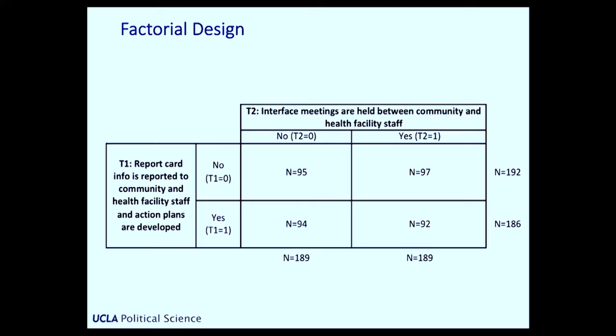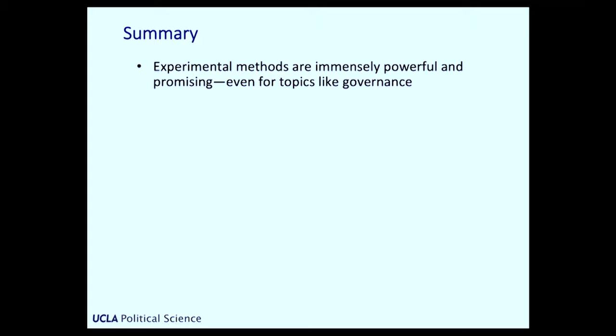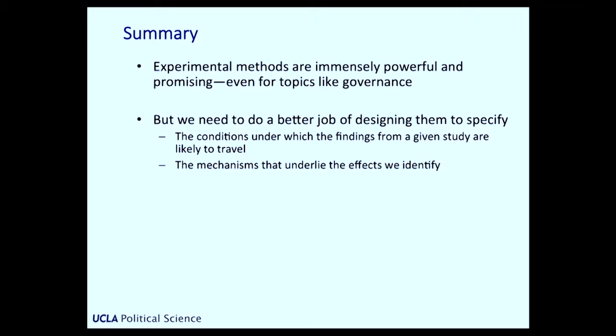So in summary: experimental methods are really powerful and promising, even for topics that are hard to study like governance. But we need to do a better job of designing them to specify first the conditions under which the findings the study generates are more or less likely to hold, and second, the mechanisms that underpin the effects we're identifying. The ACT Health project that I told you about is, I think, an example of a study that tries to build into its design the ability to answer these questions. We'll keep you posted on what we find. Thank you.